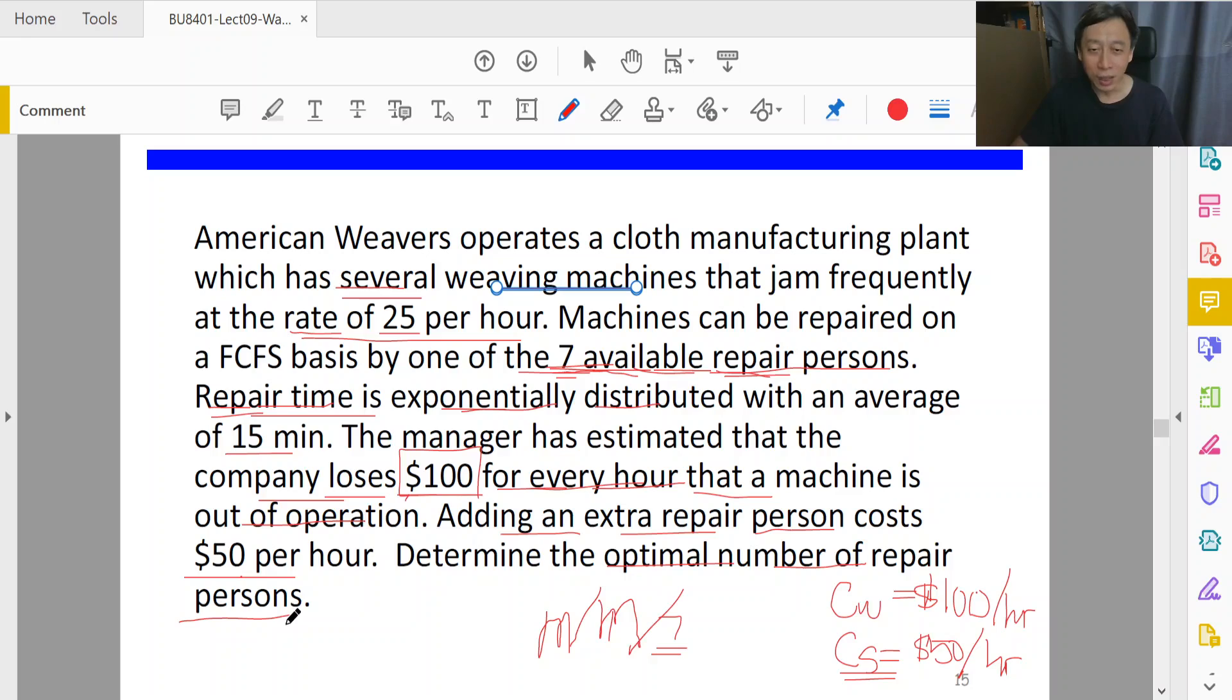Now the question is how do we start? We want to find k. I thought we said k equals seven? Well, it could be that seven is the current situation but it is not optimal. Are we having too many technicians than necessary? It could be that optimally k equals five, or the optimal could be ten, or it could be that the optimal number is seven.